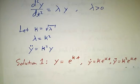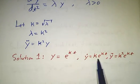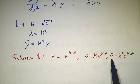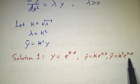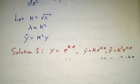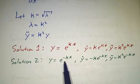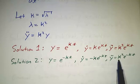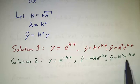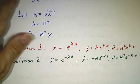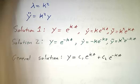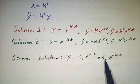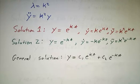One solution to that equation is e^(κt). If you take the derivative once you get κe^(κt), take the derivative again you get κ²e^(κt). Another solution is e^(-κt): you pick up −κ when you take the derivative once, −κ again when you take it again, the minus signs cancel and you get κ²e^(-κt). So the most general solution is c₁e^(κt) + c₂e^(-κt).